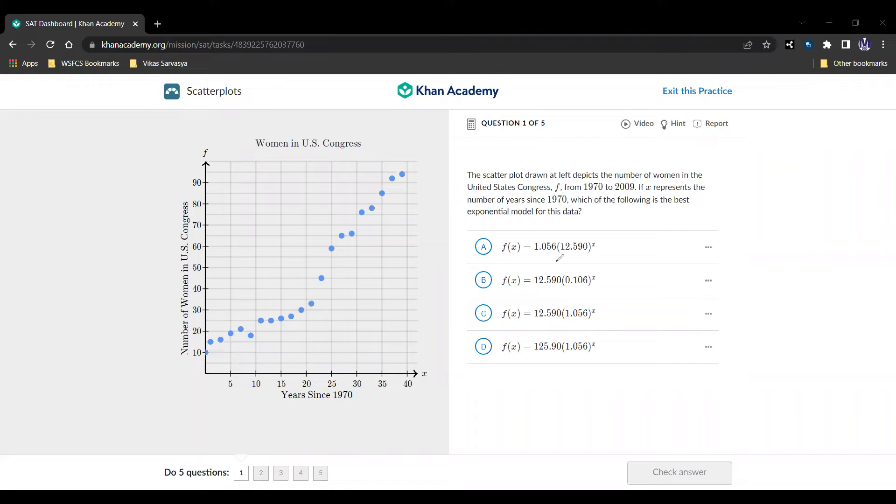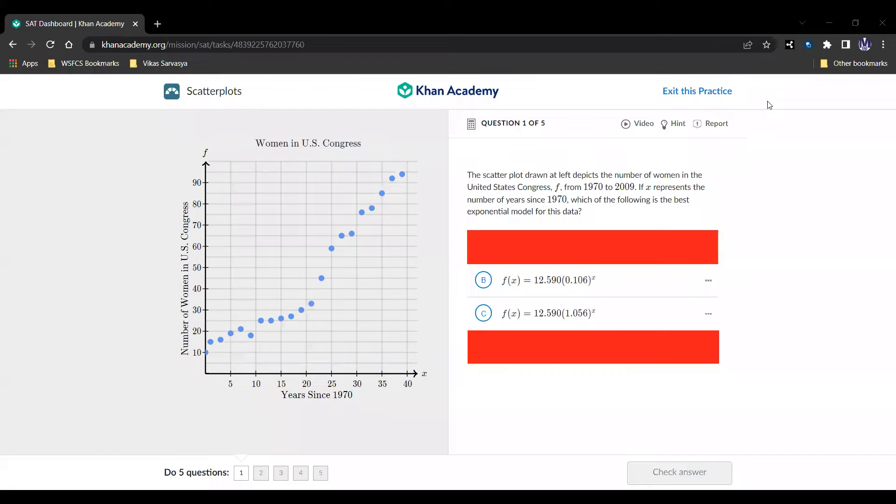So looking at answer choices, we see 1.056 and then like 12, 12 and a half. So it's going to be much closer to 12 and a half than 10, so we can get rid of this first answer choice, right? Because it starts at the wrong number. And we can also see from the last answer choice starting at 125.90, which is way off the end of the graph. That's not going to work either. Never going to work. And so d is gone as well.